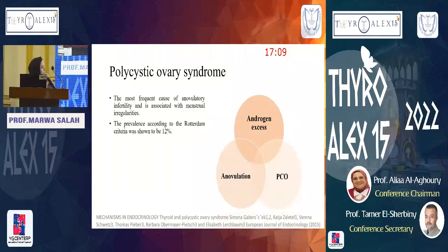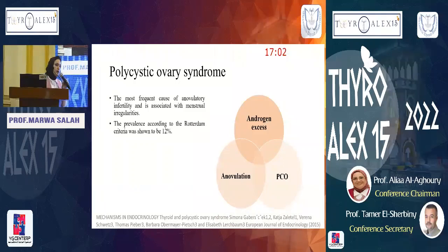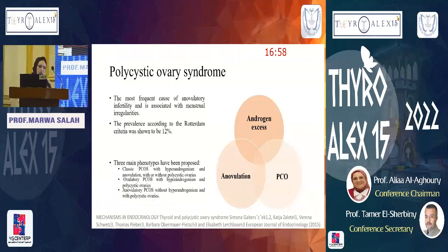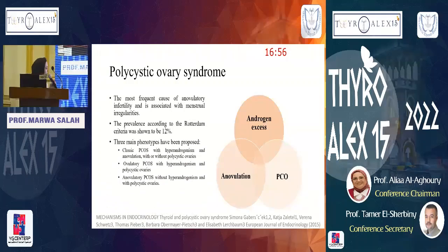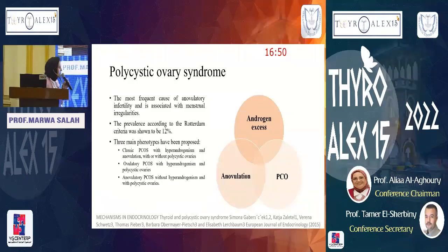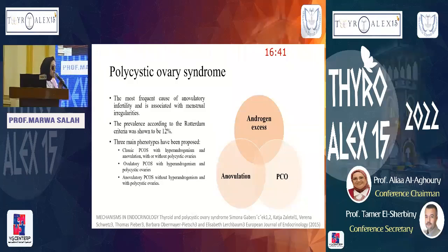Polycystic ovary syndrome is characterized mainly by chronic anovulation together with evidence of hyperandrogenism and polycystic ovaries detected on ultrasound. There are three main phenotypes: the classic type characterized by hyperandrogenism and anovulation; the second type with hyperandrogenism and polycystic ovaries; and finally anovulatory PCOS with polycystic ovaries.